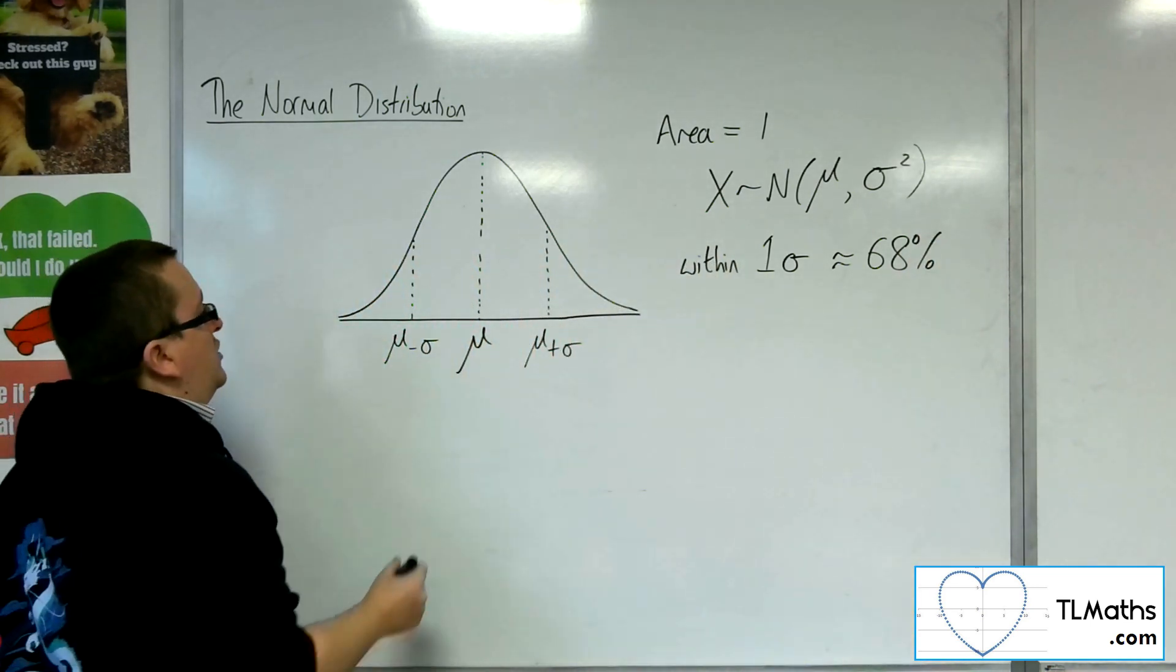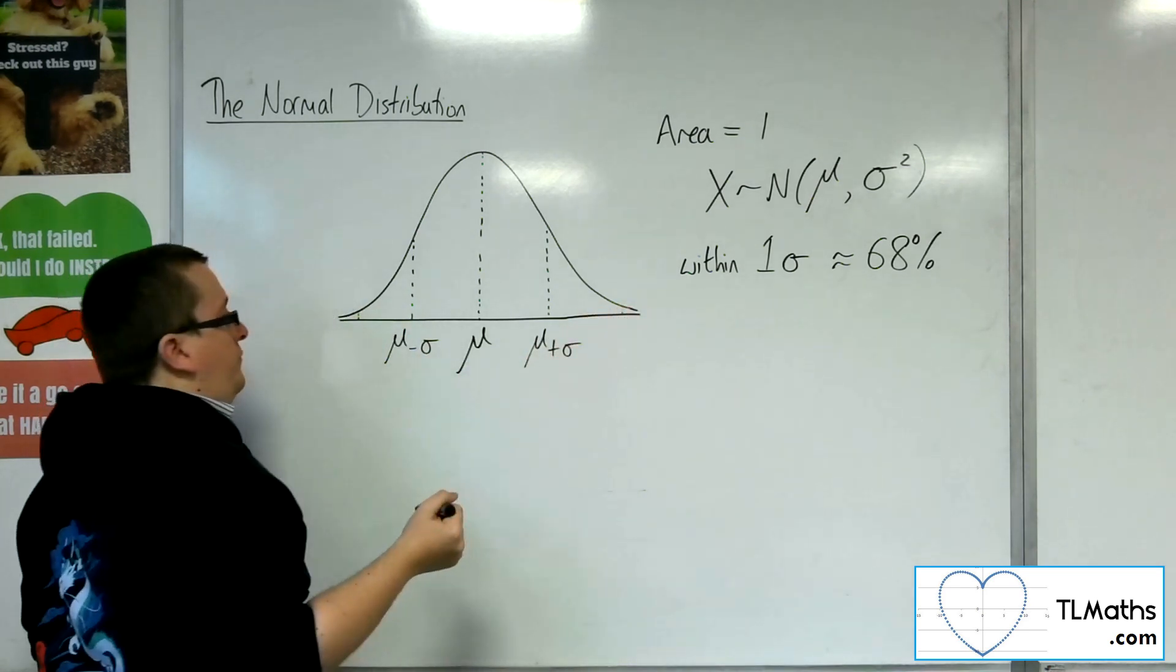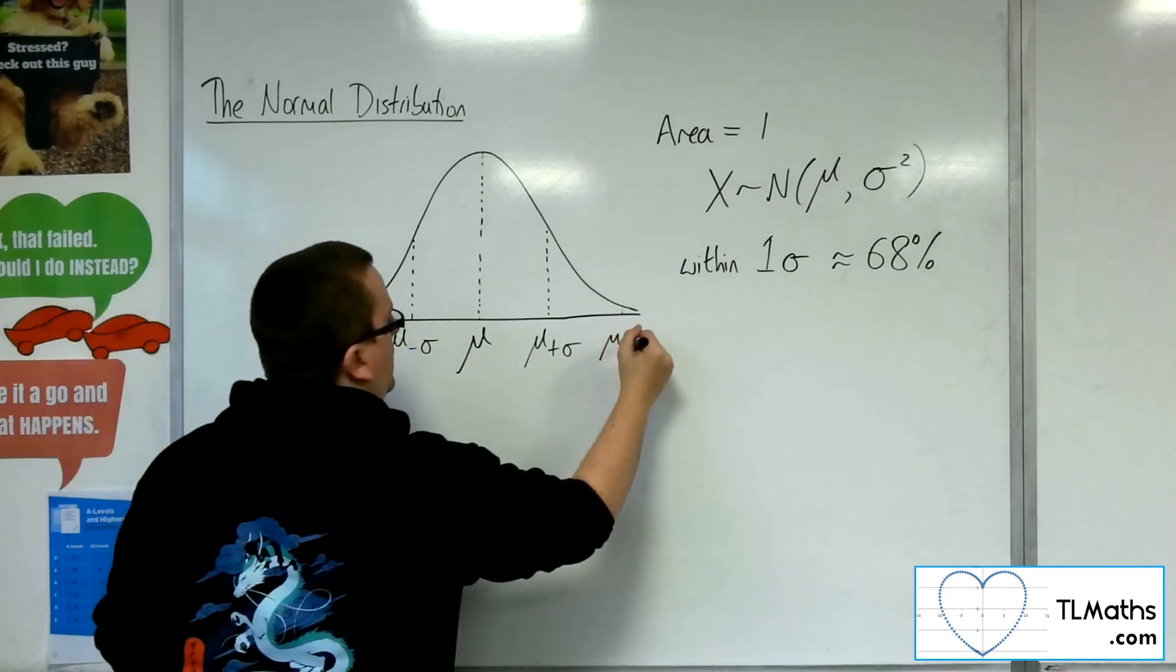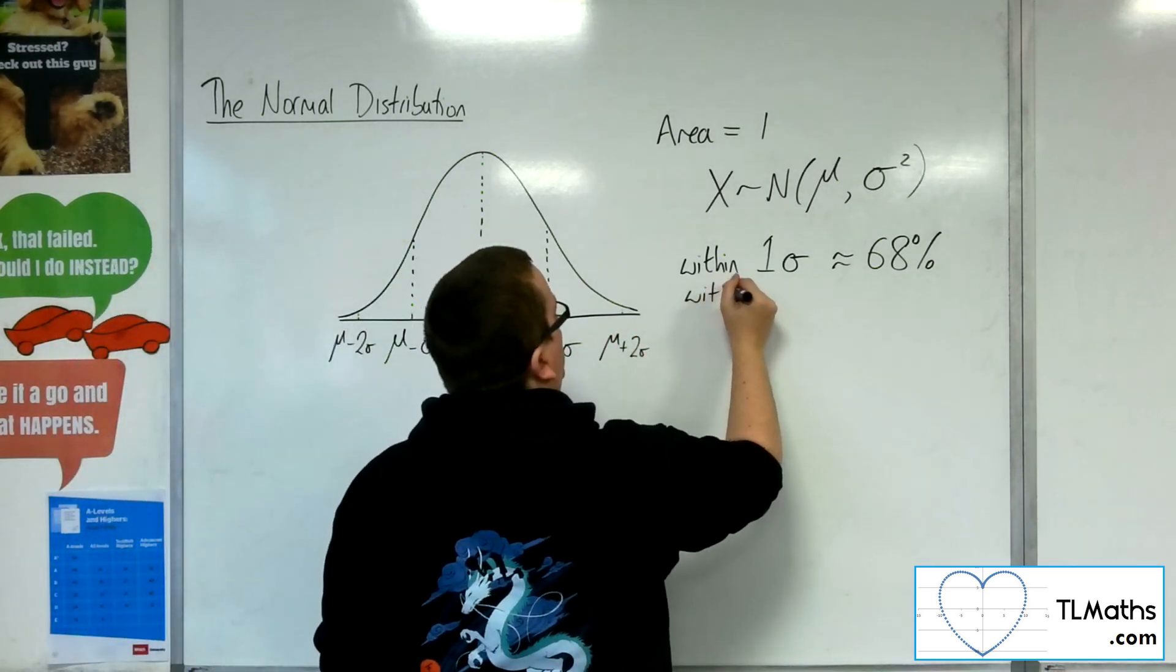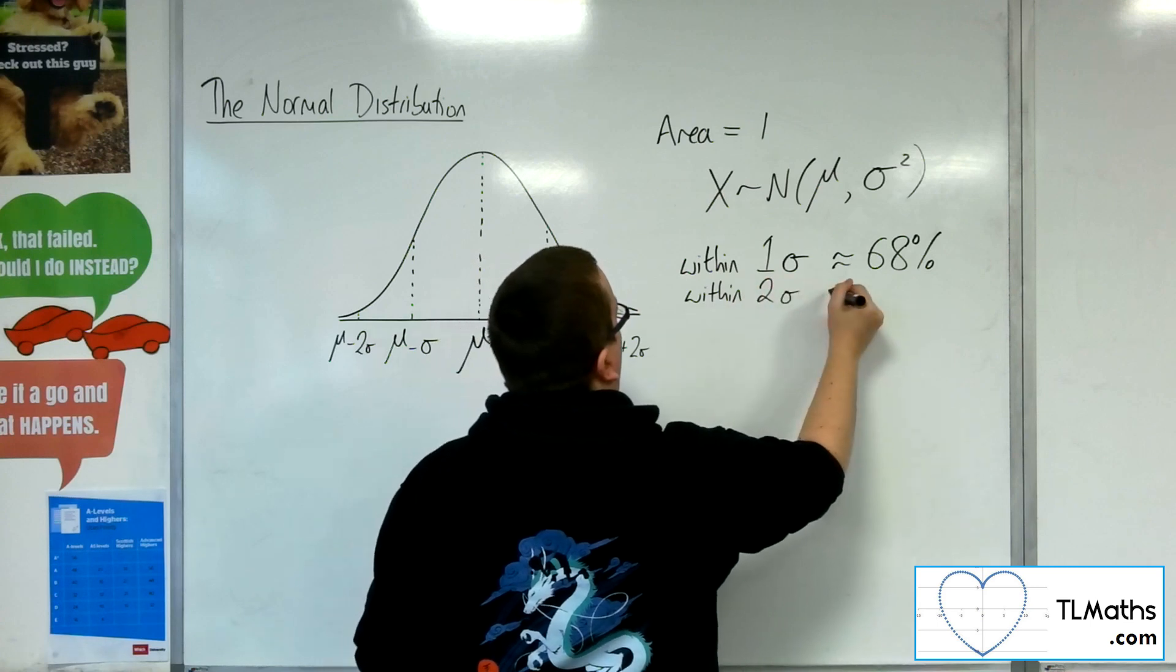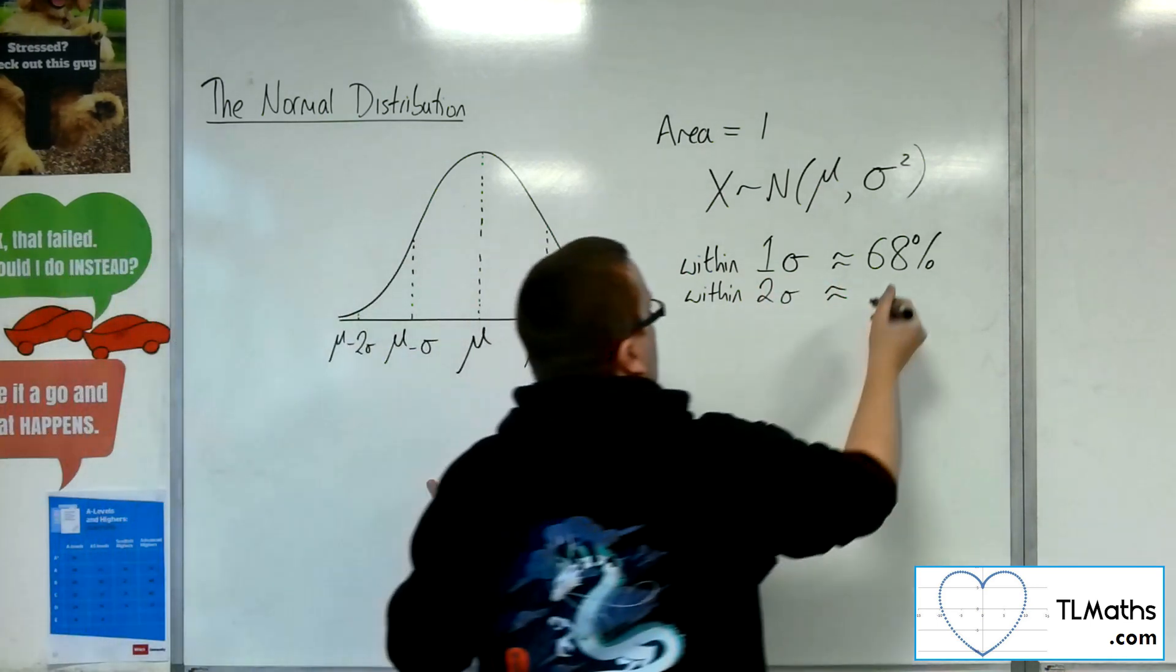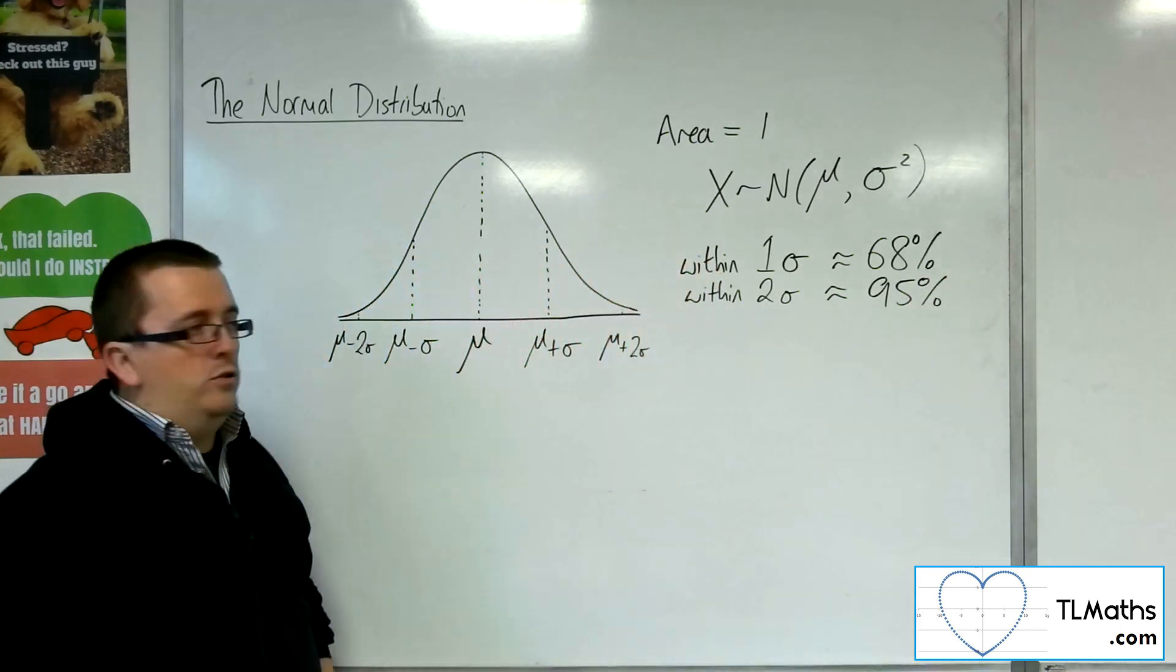Now, when you get to two standard deviations, okay, so mu take away two standard deviations, mu plus two standard deviations. So within two, you can see that we've already got nearly all of the information. This is actually approximately 95% of the information.